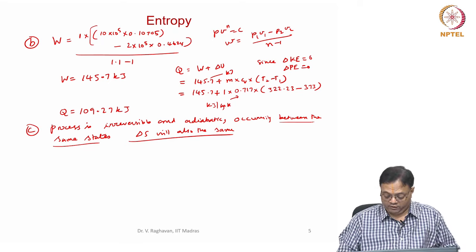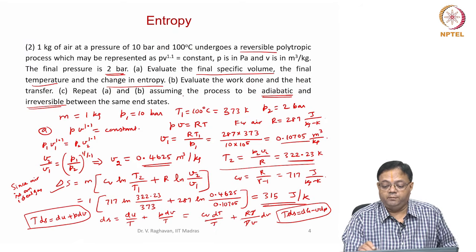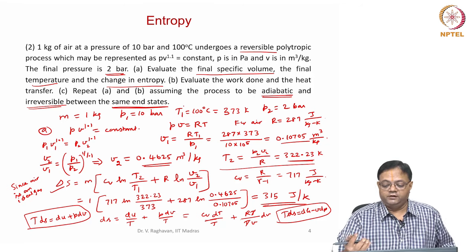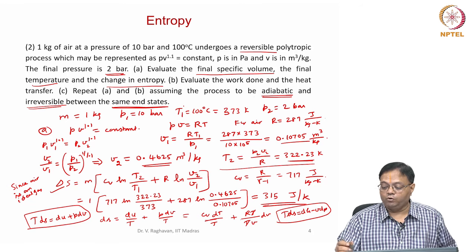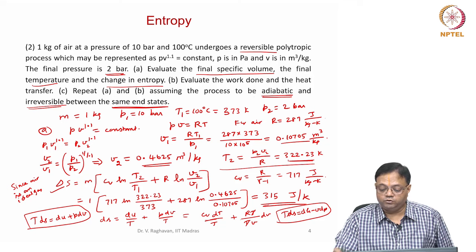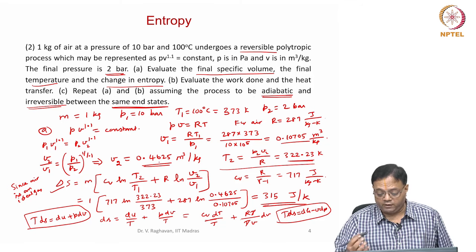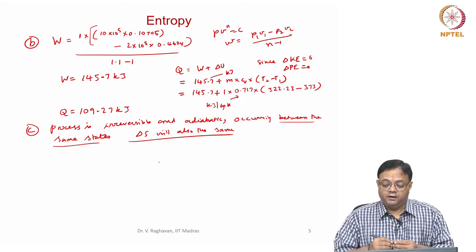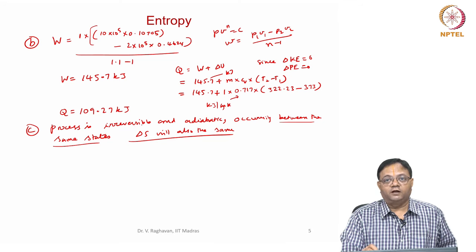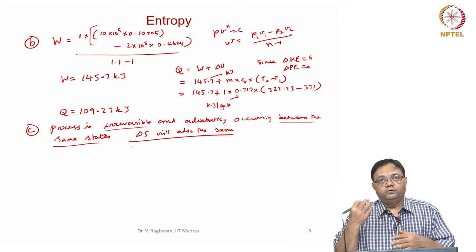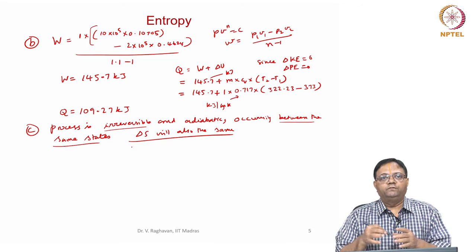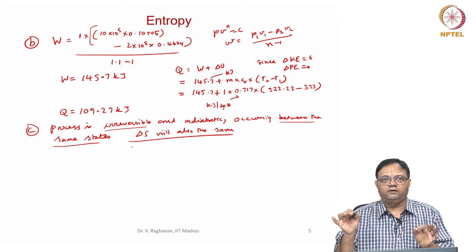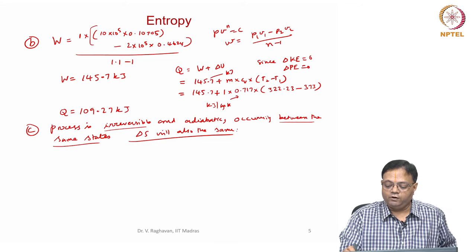Since the same states are involved — T2 = 322.23 K and V2 = 0.4625 m³/kg — delta S is also the same. We cannot calculate delta S otherwise because the process is irreversible. Since entropy is a property, delta S calculated using a reversible process between the same end states applies for any process between those same end states.